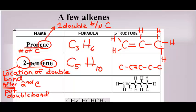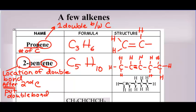Now we fill in so that every carbon has four bonds around it, filling them with hydrogens. The first carbon needs three H's. The second carbon has three bonds already, so it only needs one. The third carbon has three bonds, so it only needs one. The fourth carbon has two bonds, so it needs two more. The fifth carbon has one bond, so it needs three. That is how you draw them given the name and get their formula. Remember, these are molecular formulas, not empirical formulas — empirical formulas are reduced. Try number three on your own: I give you the structure; write the formula and name it. We'll do number four together in class on Tuesday.